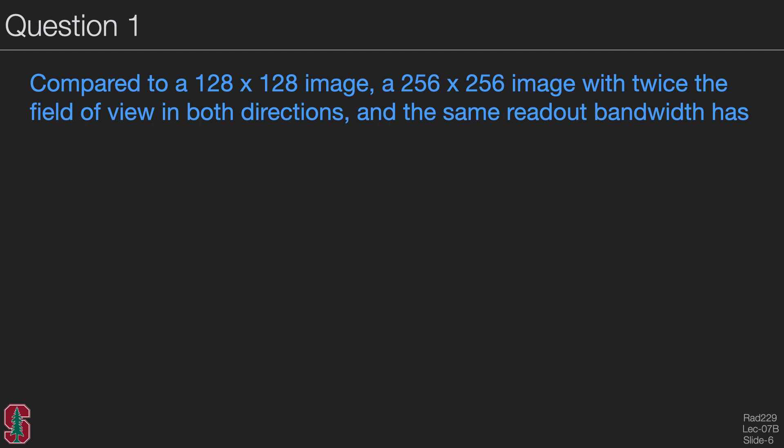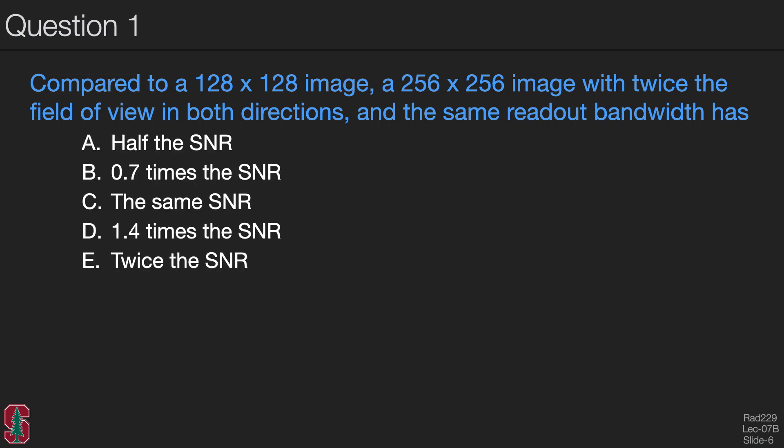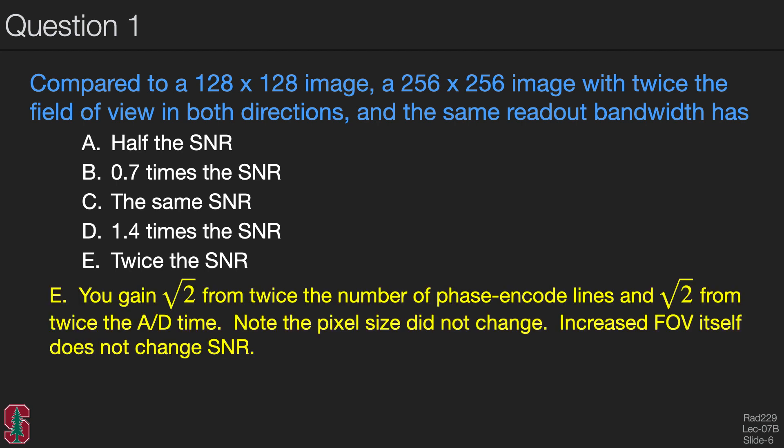Compared to a 128 by 128 image, a 256 by 256 image with twice the field of view in both directions and the same readout bandwidth has which SNR relationship? The answer is E: you gain a square root of 2 because you have twice the number of phase encoding lines, and an additional square root of 2 because you have doubled the A-to-D time. Both factors give a square root of 2, so overall you get twice the SNR. Notice that the pixel size did not change, and increasing the field of view itself does not change the SNR.